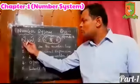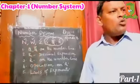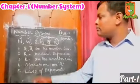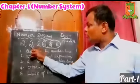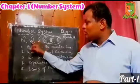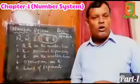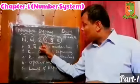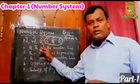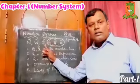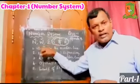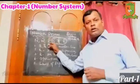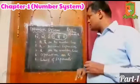What do you mean by natural number? Counting numbers are called natural numbers. Counting numbers along with zero are called whole numbers. Counting numbers and their negatives along with zero are called integers.